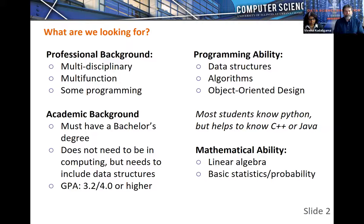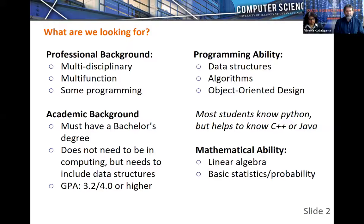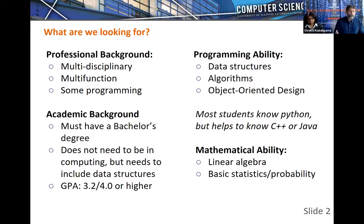Make sure you have at least two courses in computer science indicated in the application form. Most students come in knowing Python, MATLAB, or R. We'll be teaching many courses using production programming languages like C++ or Java — it's not a requirement to know them, but it's a good opportunity to pick one up. We'll also be looking for linear algebra and some experience with statistics and probability, as many courses rely on machine learning, data mining, and related fields.